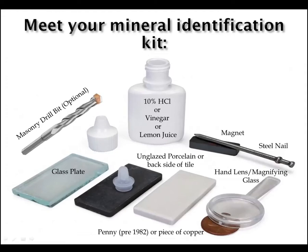Now let us move on to tools we use to test minerals. A basic identification kit consists of some pretty common household items: a magnet, a steel nail, a hand lens or magnifying glass, a piece of copper or a pre-1982 penny, an unglazed porcelain streak plate, a form of weak acid, and an optional masonry drill bit. A 10% hydrochloric acid solution works best as the reaction is very visible, and can be obtained at a geological supply store. You can also use vinegar or lemon juice, but you may need to use a magnifying glass or scratch and powder the sample in order to observe the reaction. Another method would be to put the sample in a cup of vinegar or lemon juice and see if bubbles start to form and float to the surface — the reaction will increase slightly with time.